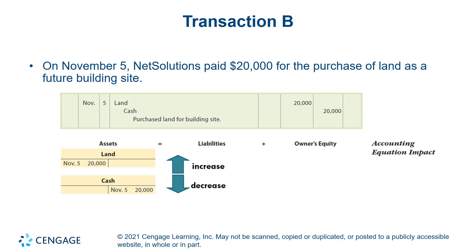Cash decreased for the payment to purchase land, so it is credited $20,000. The description is: purchased land for building site. Both land and cash are assets — one increased $20,000 and the other decreased $20,000. They offset each other within the assets element, so there is no impact on liabilities and owner's equity.